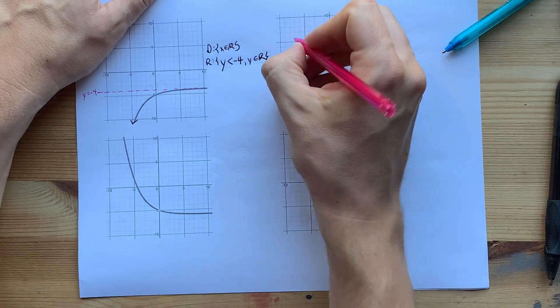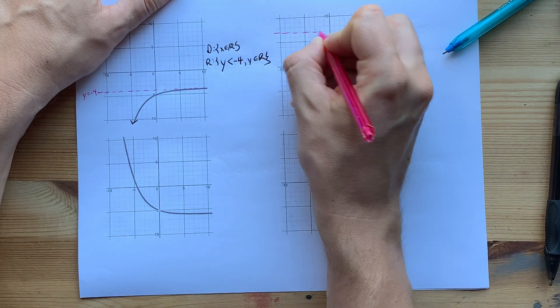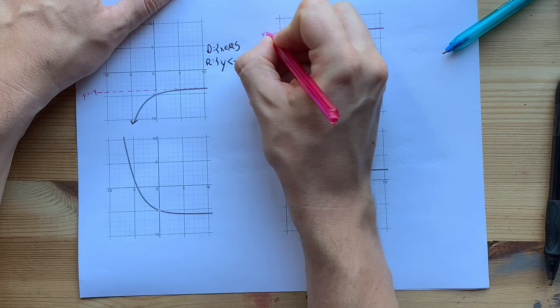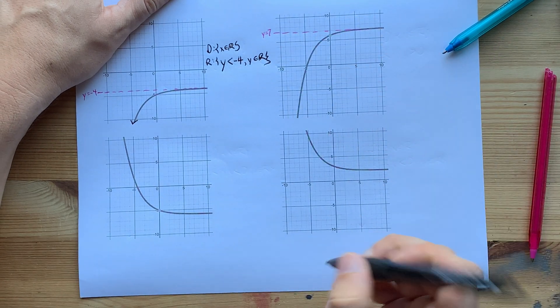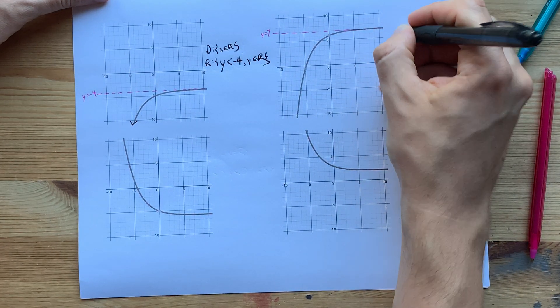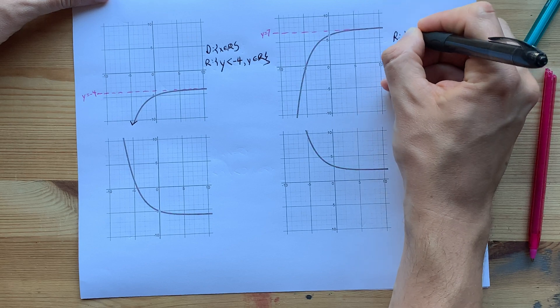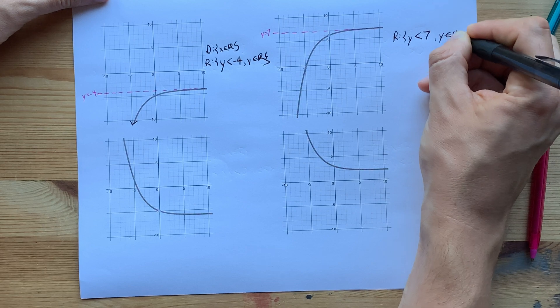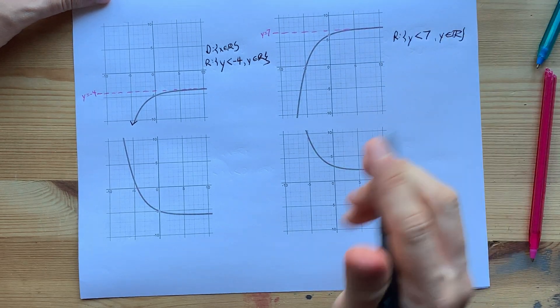Let's do another one with the horizontal asymptote. It kind of looks like here to me. If that's 5, that's 6, that's 7. My horizontal asymptote is y equals 7. So, my range is, I'm below it, y less than 7, y∈R. Domain's x∈R.